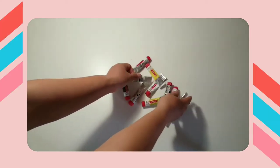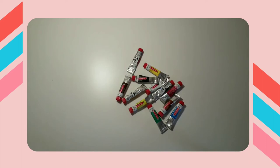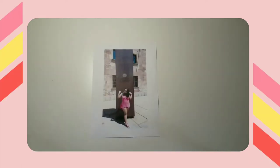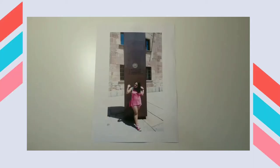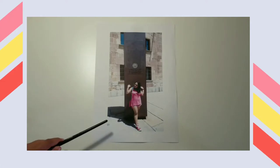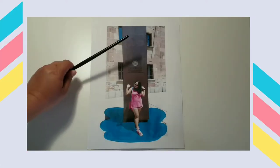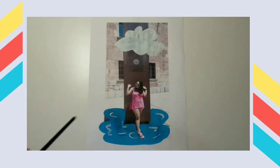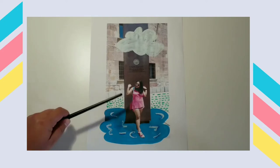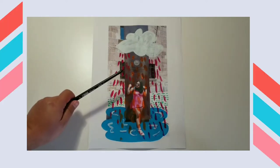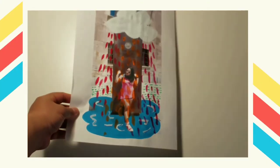You will need paints, a brush, a palette, and of course a picture you want to work with. Let's create your imagination. Here, for example, I'm imagining myself enjoying the rain. And that's how you make an intervened photograph.